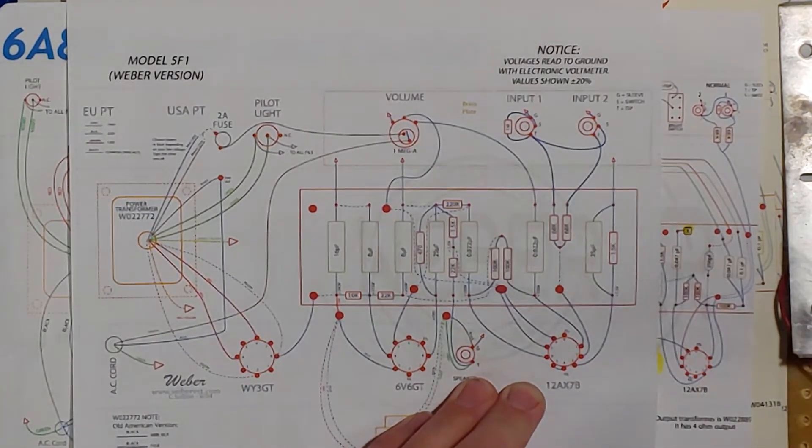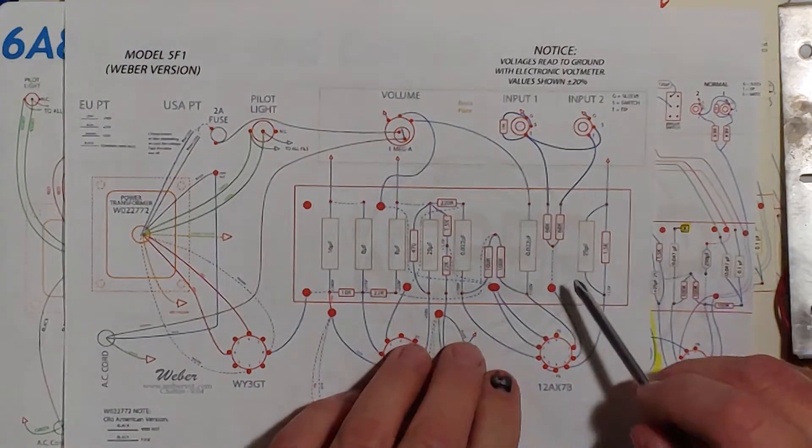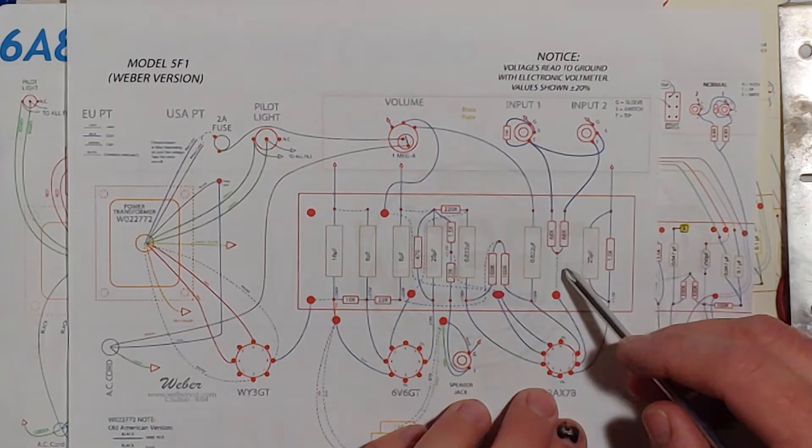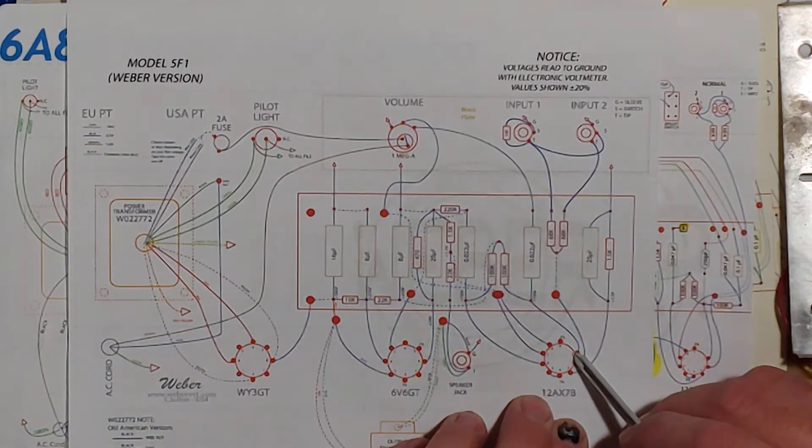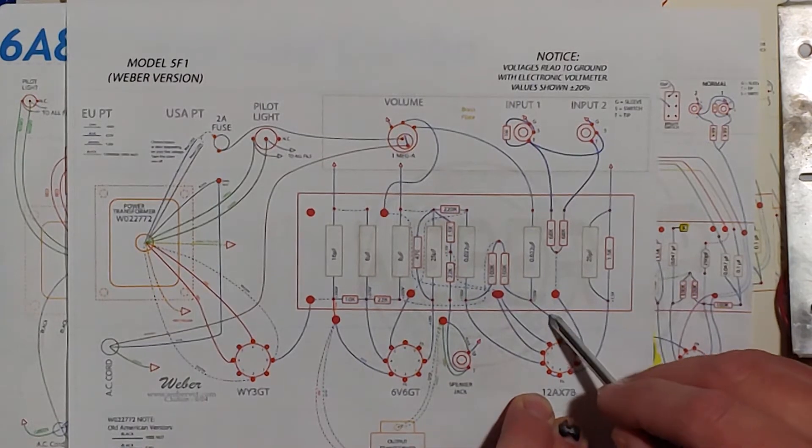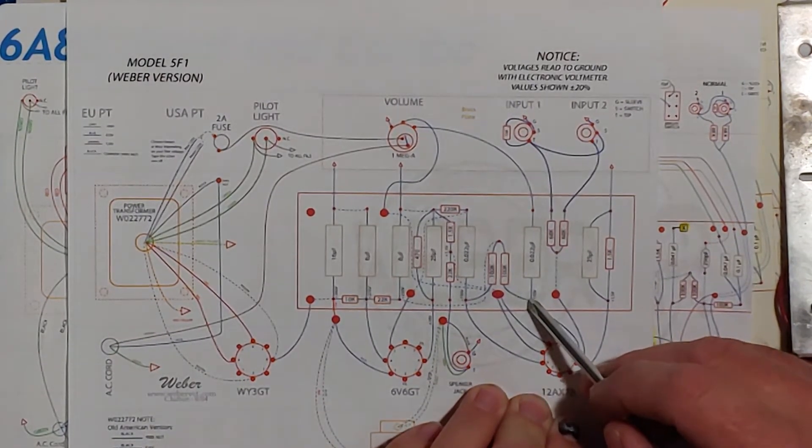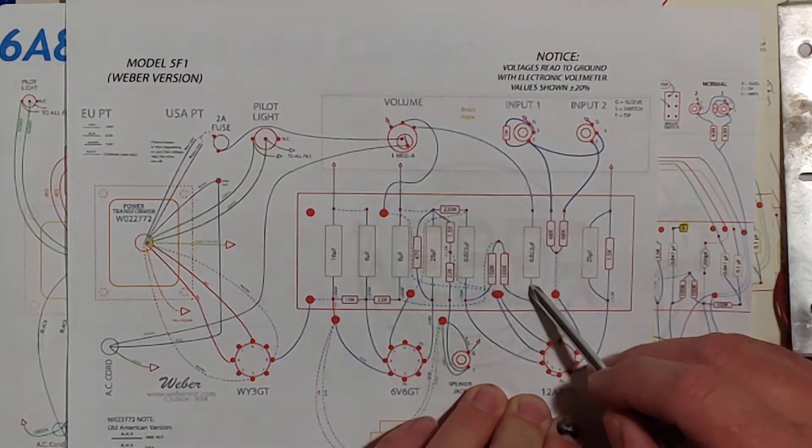So it's actually much easier than you think to graft this on. Let's follow this tone stack so it's coming off of the number one pin from the preamp tube and this number one pin goes up here to this little junction point here. It goes to the left there's this 100k resistor and if you go straight up there's this 0.022 uF capacitor.